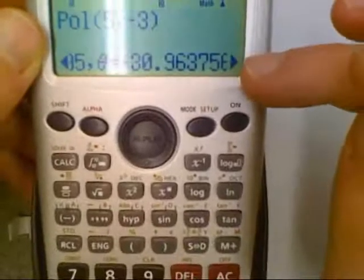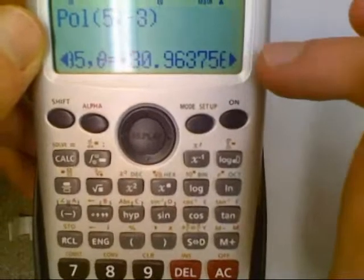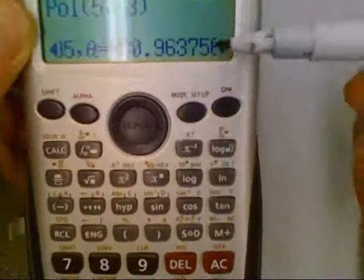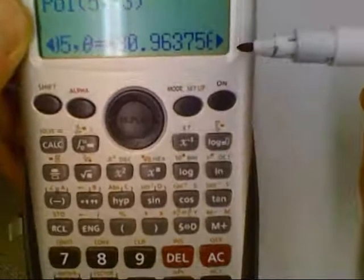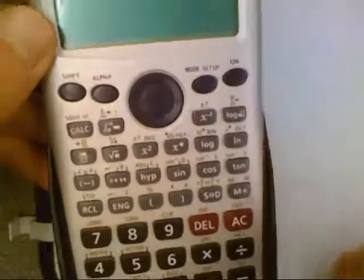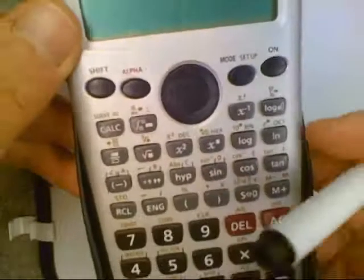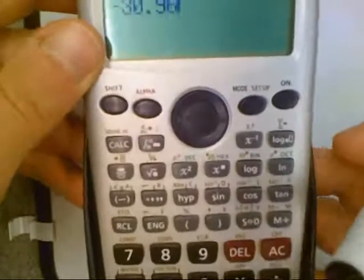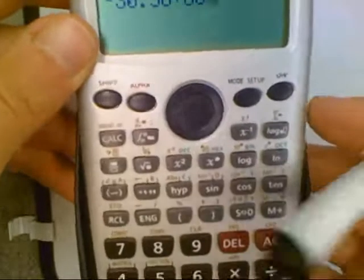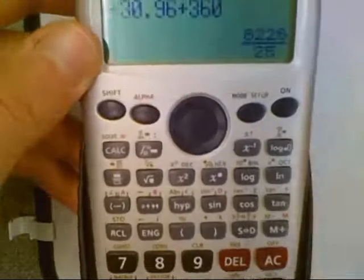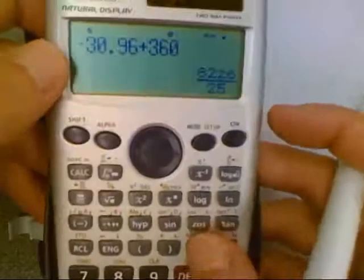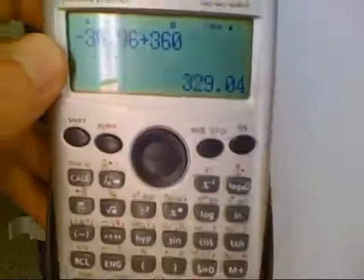So to make that positive again, we're going to have to round here. Probably be your best bet, but we're going to take negative 30.96 and add 360 to that, which gives us 329.04 degrees.